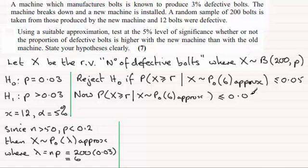I've got to rearrange this because I'm going to be looking at using the cumulative Poisson distribution tables, and they give me the probability of being less than or equal to a given value.